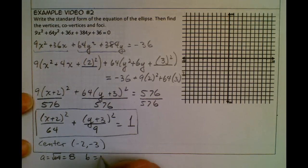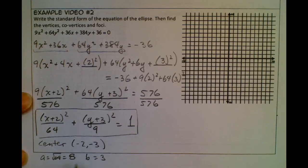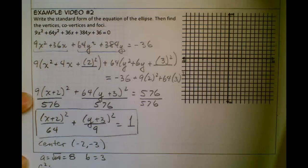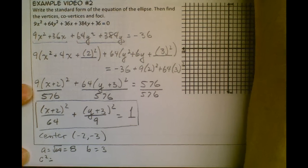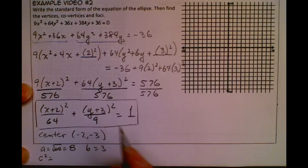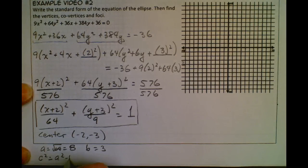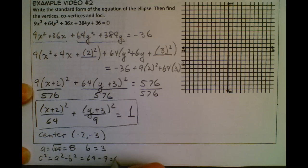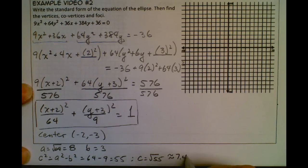And then b is going to be the square root of 9, so that's going to be 3. And then we can find c, because c² = a² - b², so that's going to be 64 - 9, which is 55. So c is the square root of 55, which is about 7.4. I'll just use this number to find some points on the graph.